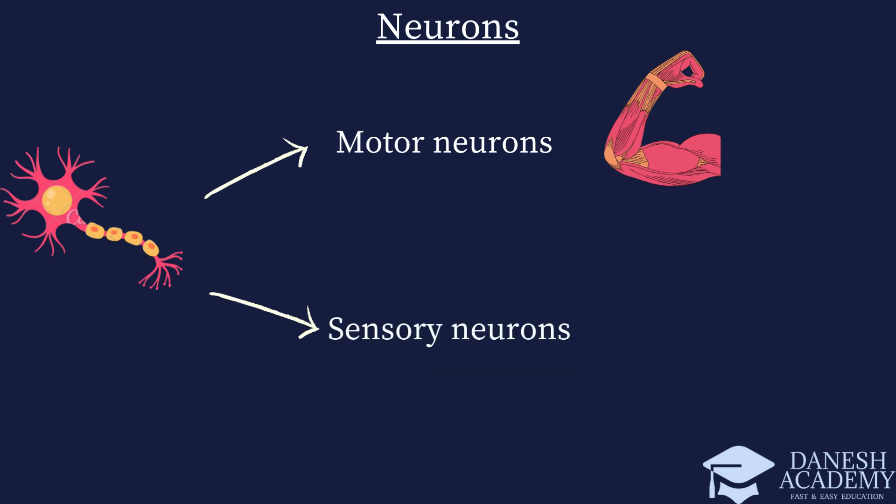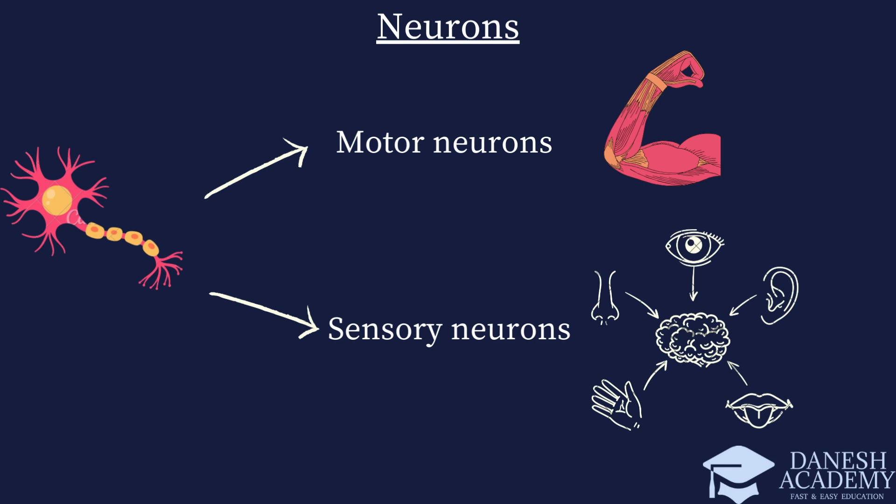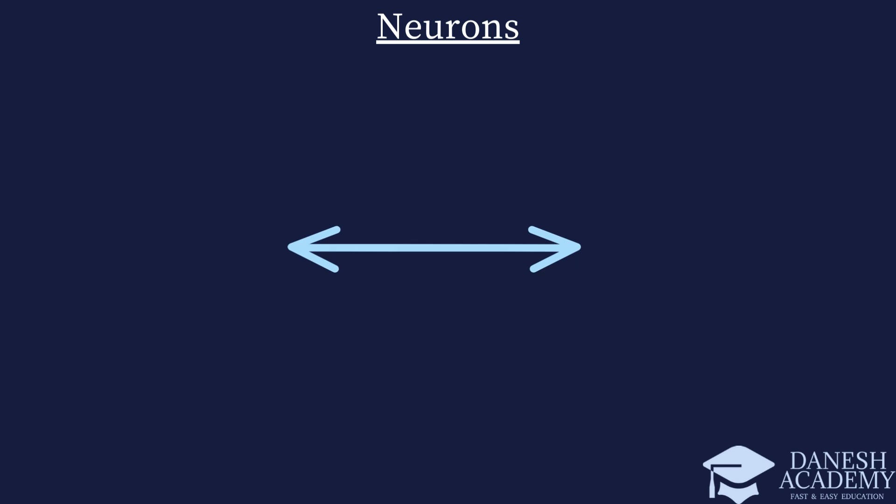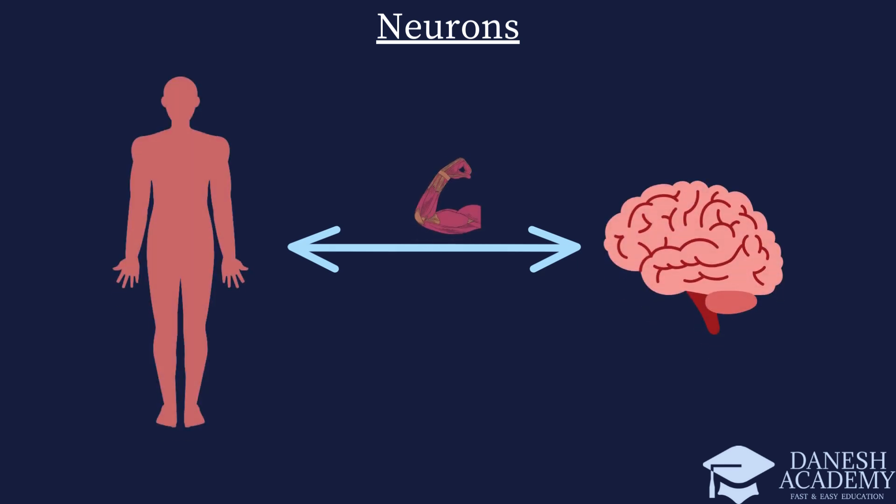Sensory neurons, on the other hand, play a crucial role in our ability to perceive and interpret the world around us. These neurons are responsible for transmitting information from sensory receptors — such as those found in the skin, muscles, joints, and internal organs — to the central nervous system. When these receptors are stimulated, sensory neurons convert the physical or chemical signals into electrical impulses, which are then relayed to the brain for processing and interpretation. This two-way communication between the body and the brain, facilitated by motor and sensory neurons, is essential for our overall bodily function and our ability to interact with the environment.